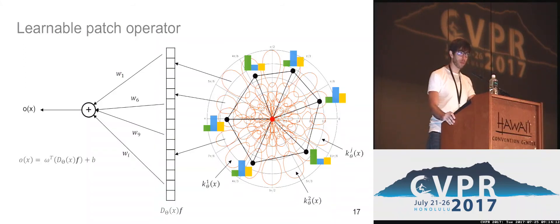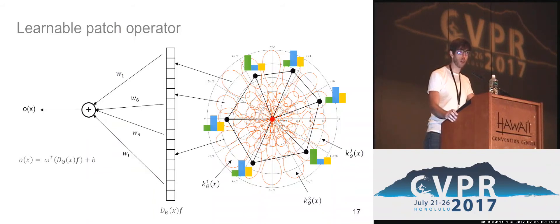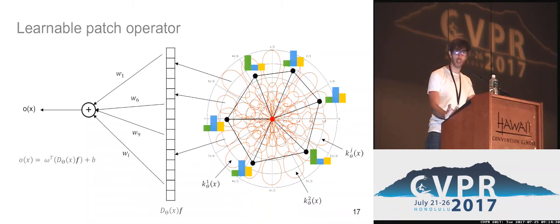To summarize, everything is quite simple in the end. We take one point, extract the neighbors, map the neighbors into some Euclidean space, apply some kernels in this space, and aggregate the information of points that have more or less similar coordinates. In the end, the convolution is just realized by means of a matrix multiplication.